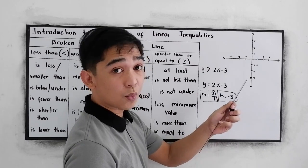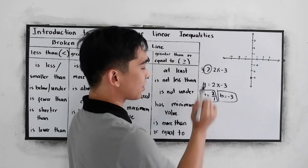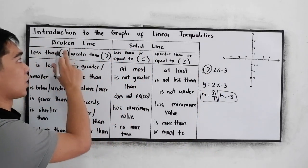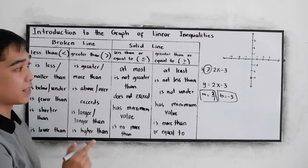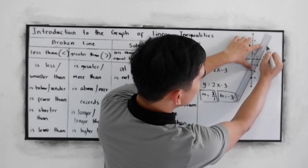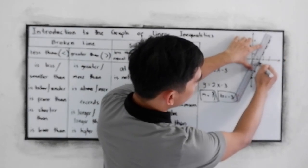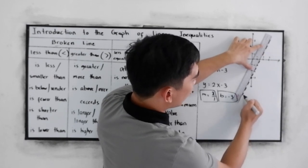Now, how are we going to use the broken line and solid line? Since we have a symbol greater than, and in our broken line, we have the greater than. So, we need to use broken line. That means this line is not included. Okay. Broken line. This will be our line, the broken line.